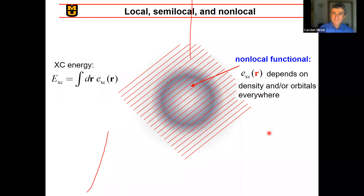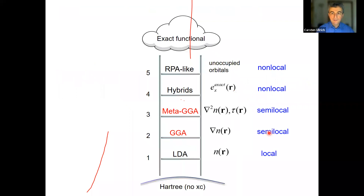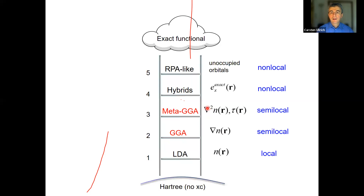On Jacob's Ladder, each step is now labeled local, semi-local, or non-local. LDA is a local functional. GGA and meta-GGA are semi-local functionals. Hybrids and RPA-like functionals are non-local. The building blocks are: LDA depends only on local density; GGA adds gradients of density; meta-GGA can have Laplacians and also tau — the kinetic energy density; hybrids have exact exchange; and RPA functionals use unoccupied orbitals.